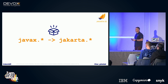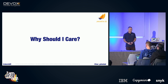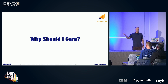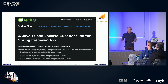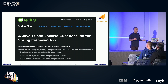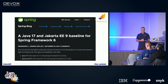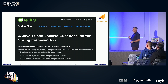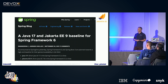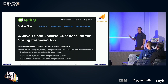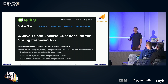You might ask why you should care about this namespace change, even if you're a Spring developer not using Jakarta EE at all. The answer is that it's influencing a lot of the industry. Earlier this year, the Spring team announced that Spring 6 will be based on Java 17 and Jakarta EE 9. So Spring is very dependent on the Jakarta EE specifications, and some of them — like Bean Validation and Persistence — are used directly in Spring applications, using the javax namespaces. That will affect your applications too.